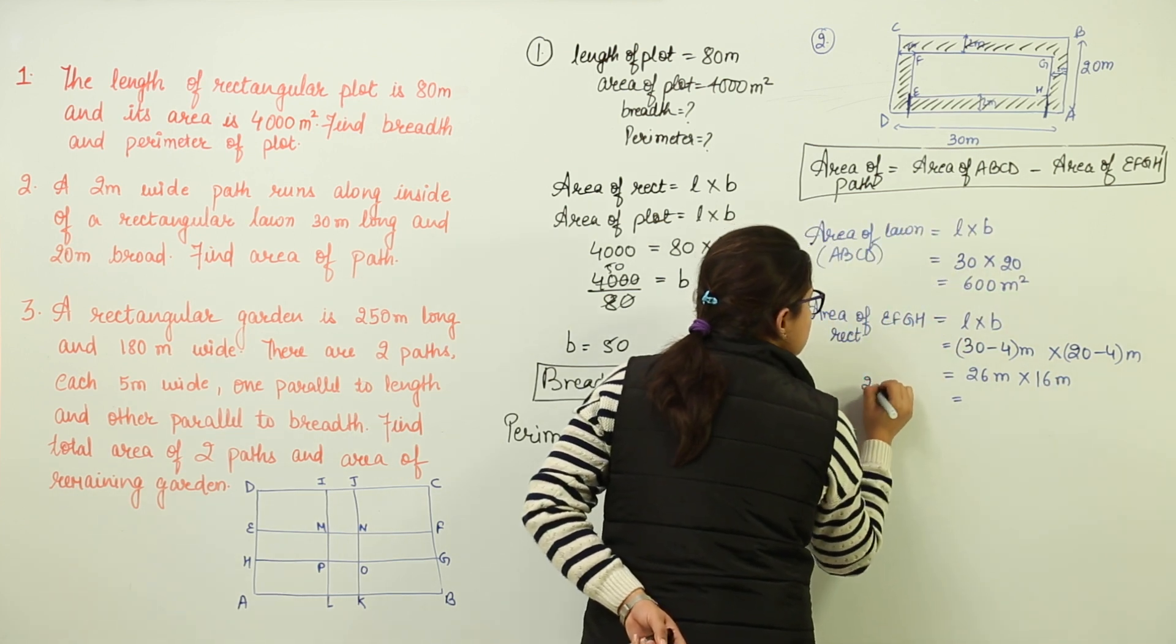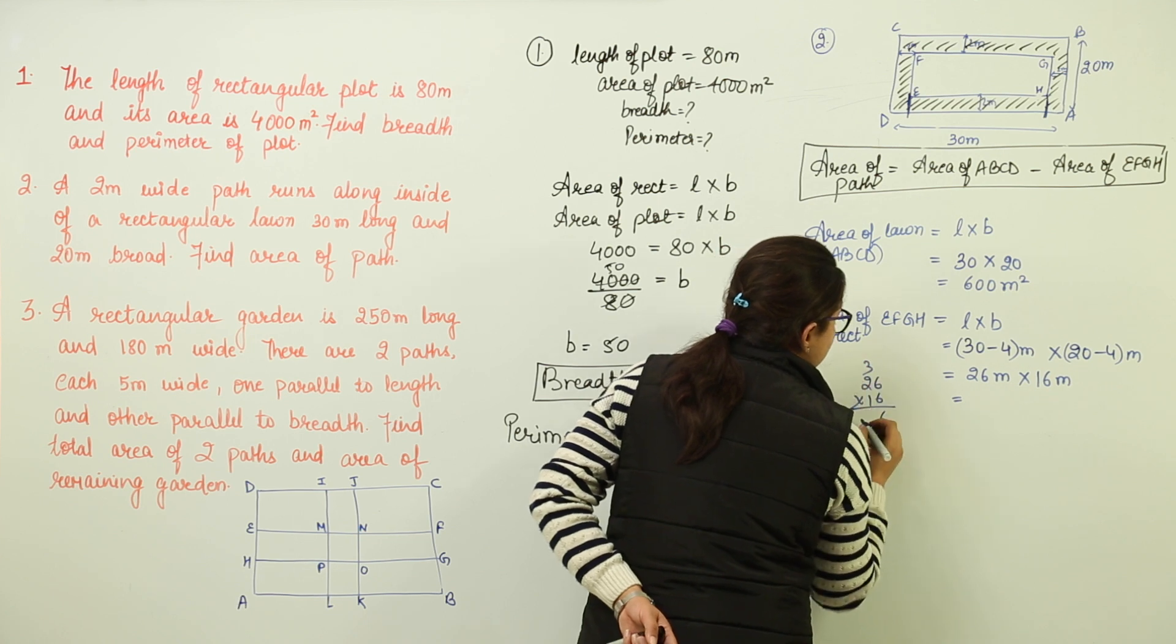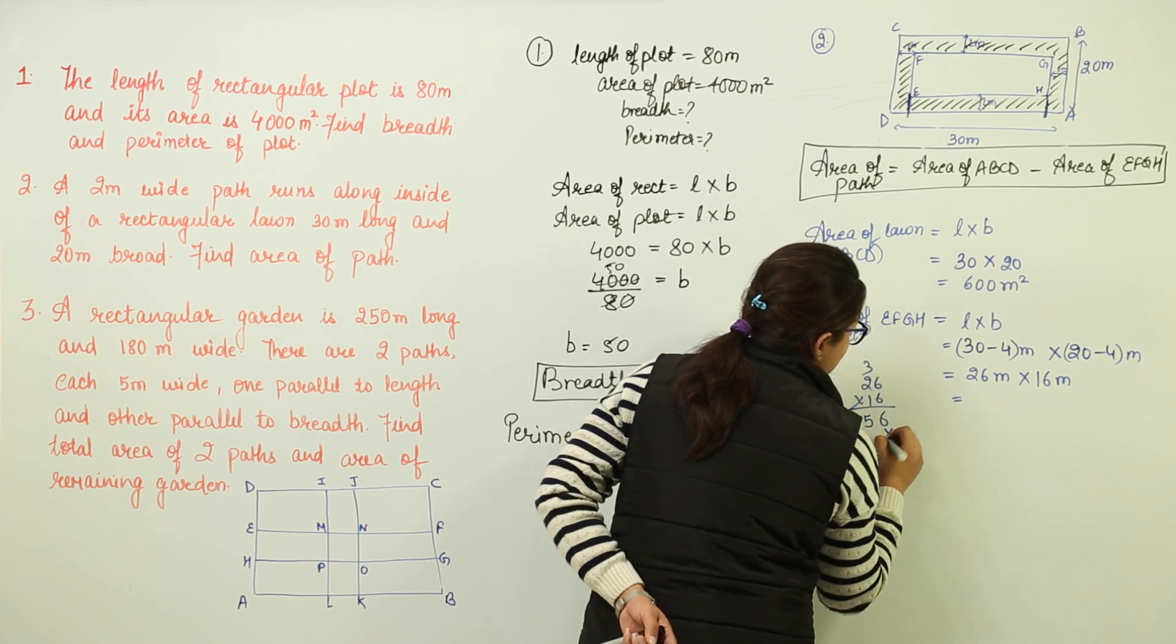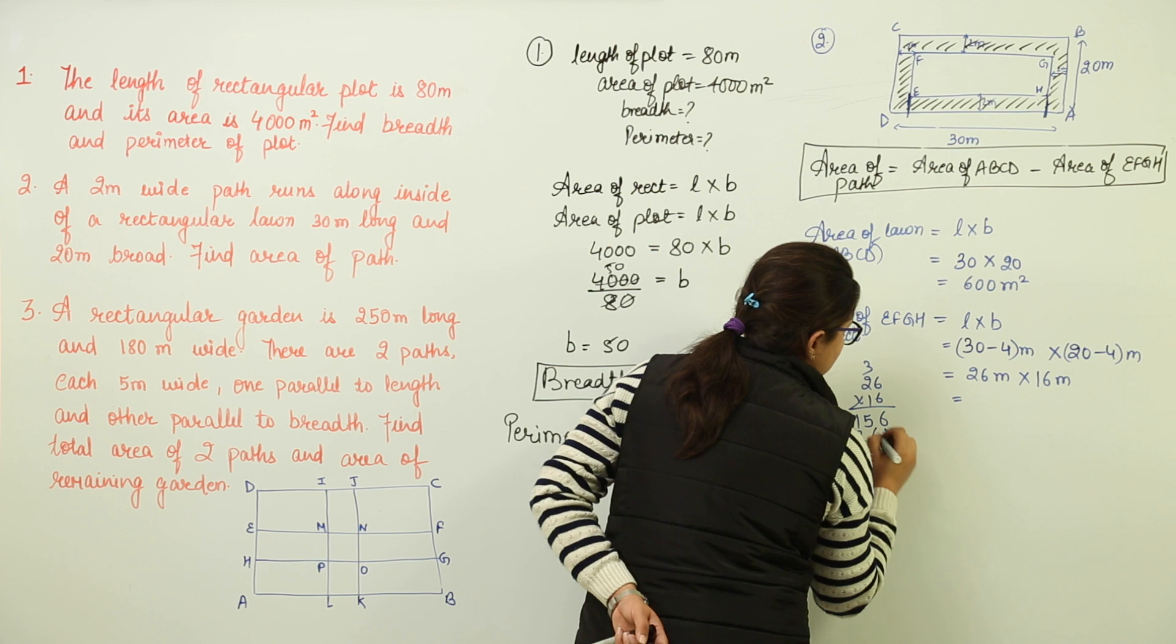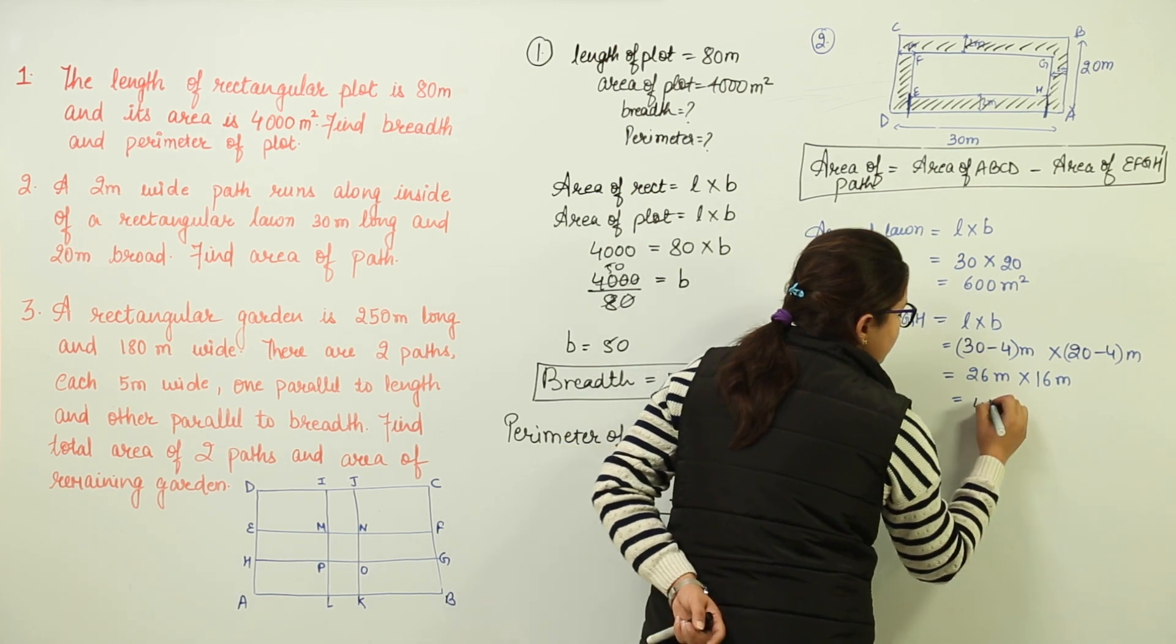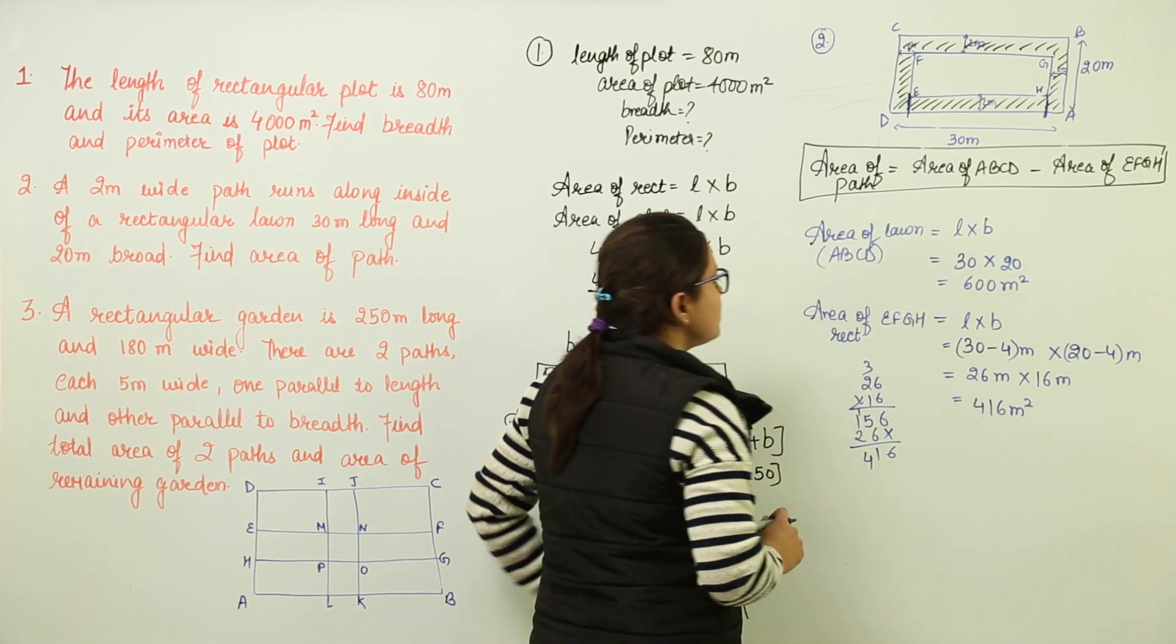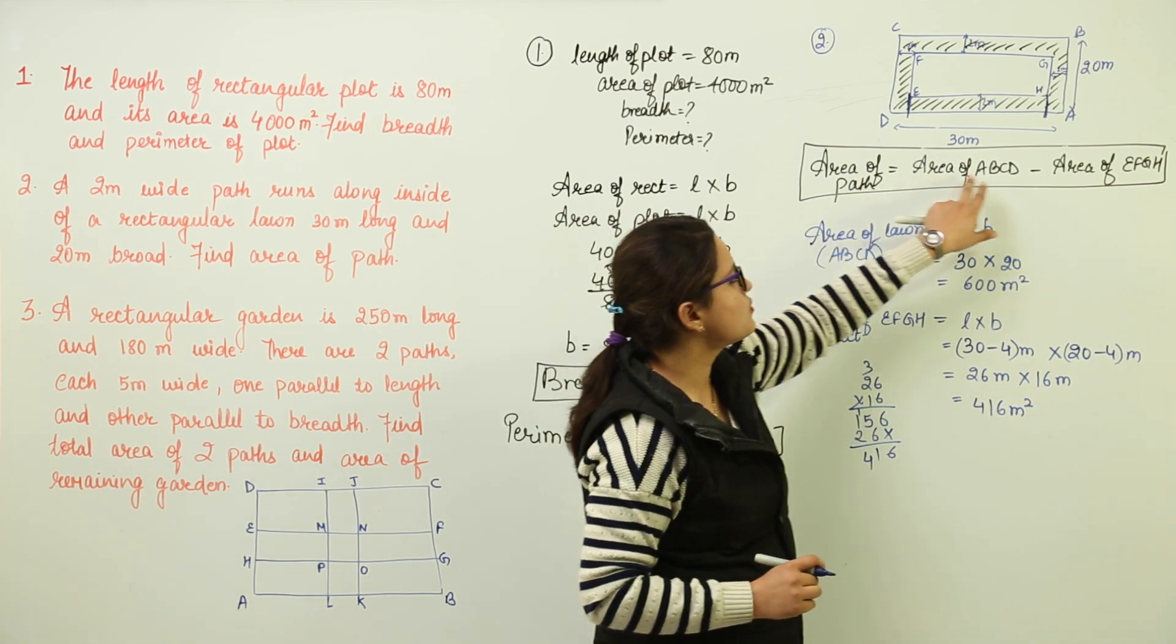Now let us solve this. 26 into 16 would give us 6, 12, 13, 14 and 15, 6 and 2, you get 6 and 5, 11, 2, 3 and 4 giving us 416 meters squared. So we have got the two areas now that we were supposed to find out.